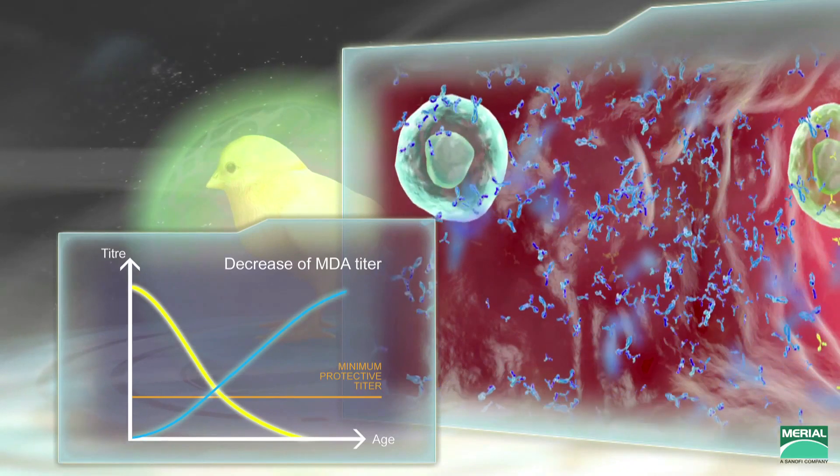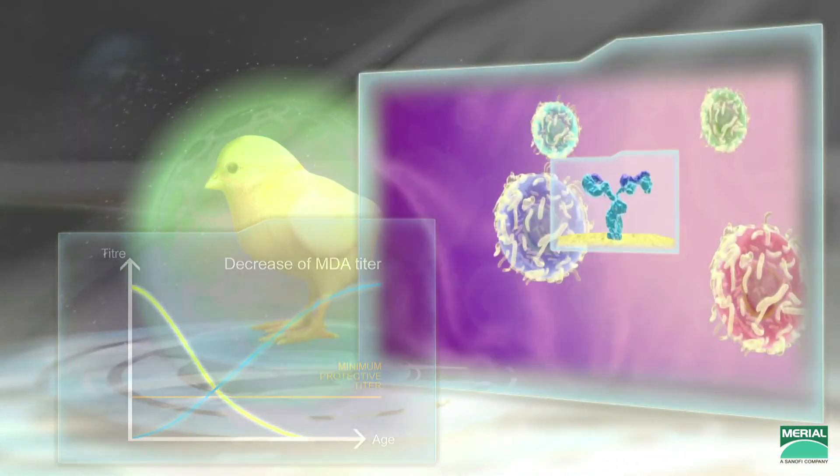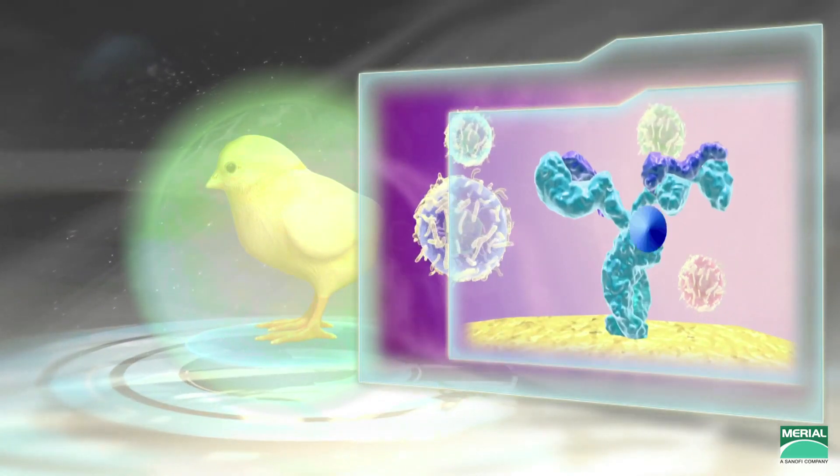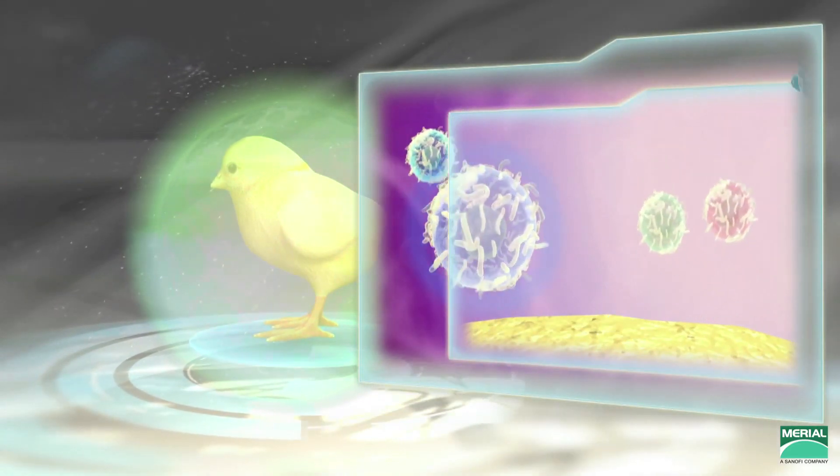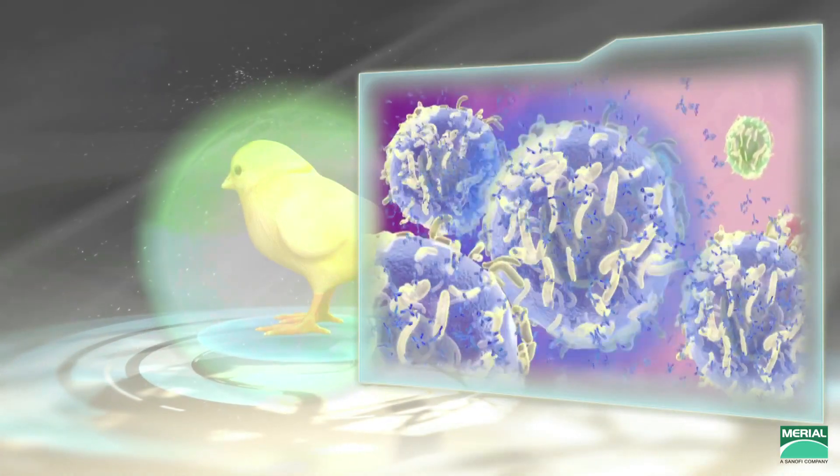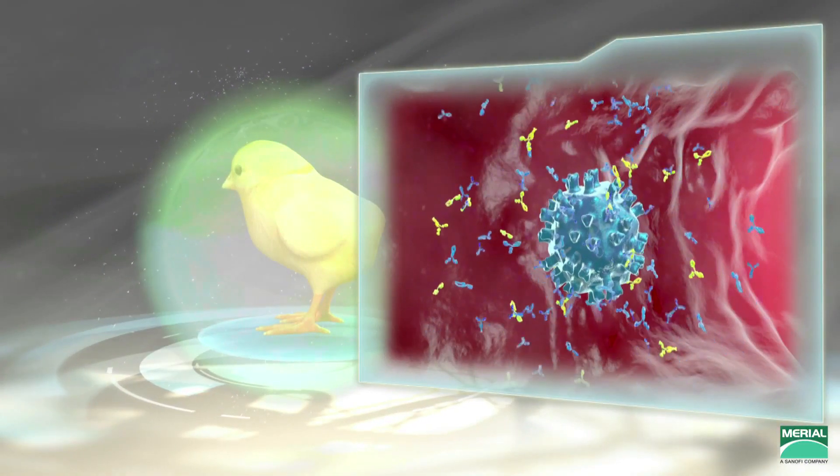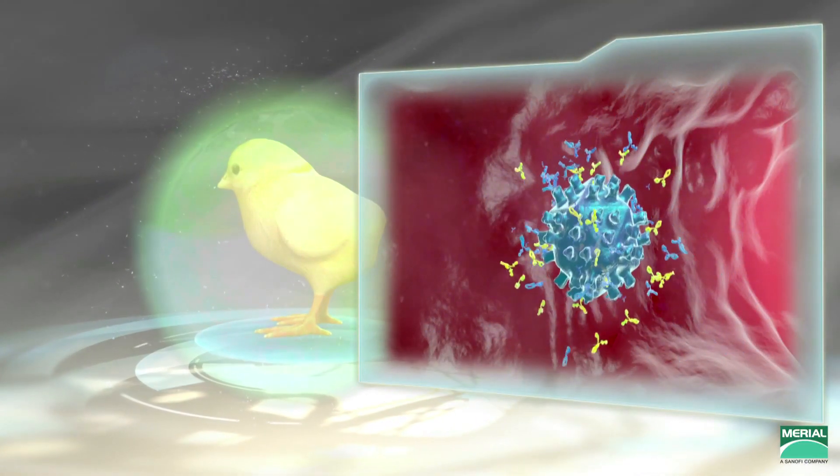Viral replication releases the VP2 protein. The B cells whose immunoglobulin receptors recognize the VP2 are activated, they multiply and change into plasma cells, which secrete new IBD protective antibodies, progressively replacing the maternal antibodies with no immunity gap.